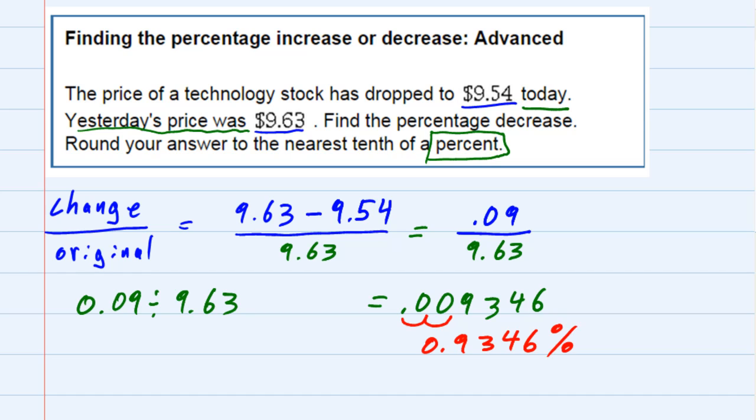Now, this is a percent, but they also told us to round the answer to the nearest tenth. So, if I'm looking at the tenths place, the digit behind it is a three. So, that means I can round down to 0.9 and then drop those other digits. So,